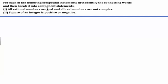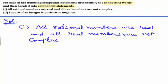For each of the following component statements, we need to identify the connecting words and break them into component statements. Let us see the solution for these statements now. The given statement is: all rational numbers are real and all real numbers are not complex. While reading the statement itself, you can understand what the connecting word is. The connecting word is AND.